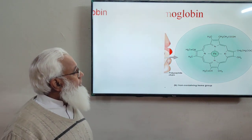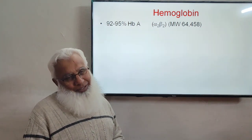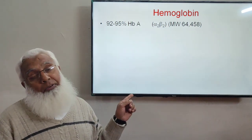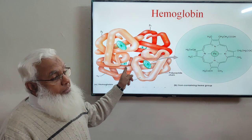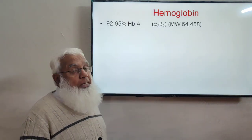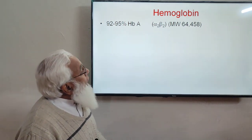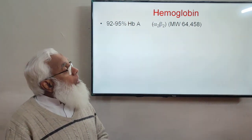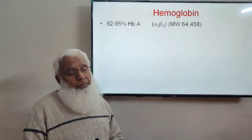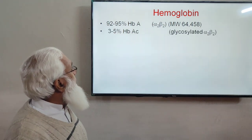There are different types of hemoglobin. Hemoglobin A, or adult hemoglobin, makes up 92 to 95 percent of hemoglobin in the blood. It consists of two alpha chains and two beta chains, with a molecular weight of 64,458. This is the most abundant form of hemoglobin.